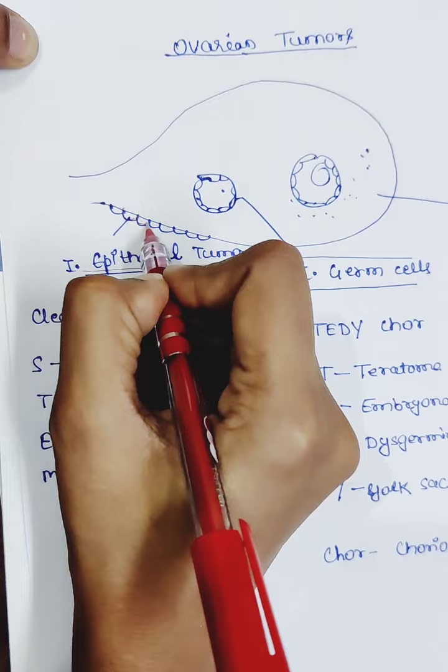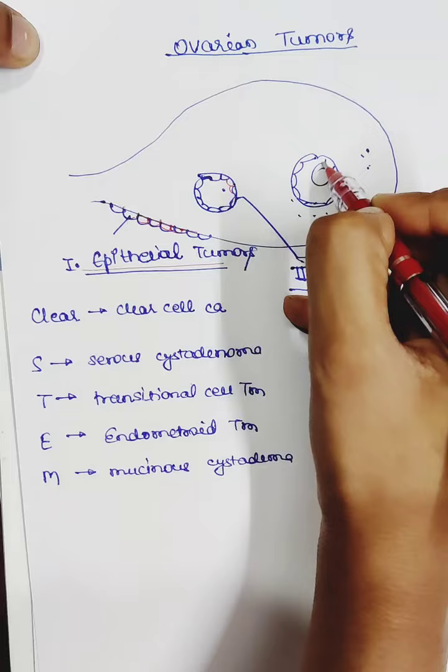This is the drawing showing ovary. This is the follicle, immature and mature follicle. And this is connective tissue and stroma of the ovary.